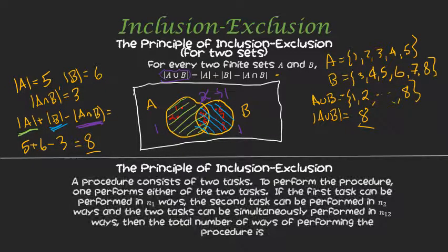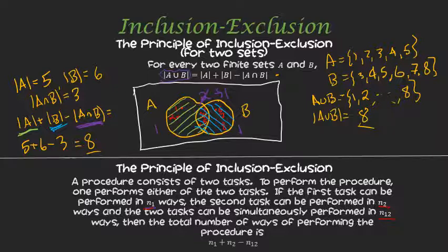Before we see an example, what does this mean in terms of procedures? We heard multiplication and addition principle talked about in terms of procedures. This is telling us what we saw in the last video — when we had a task that could be done simultaneously, like with those 10-bit strings. If we can perform the first procedure in N1 ways and the second procedure in N2 ways, and there are N12 ways to do both simultaneously, then the total number of ways is N1 plus N2 minus N12.